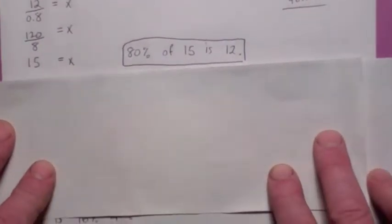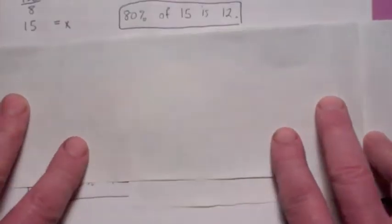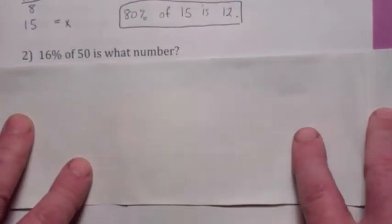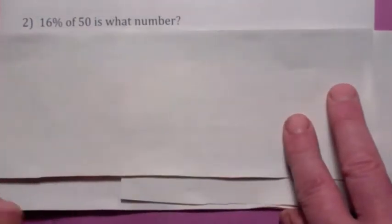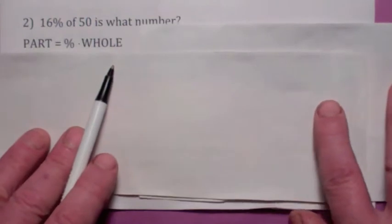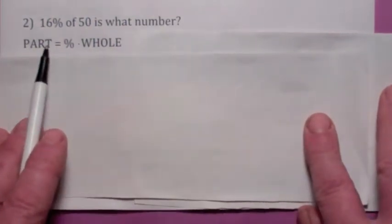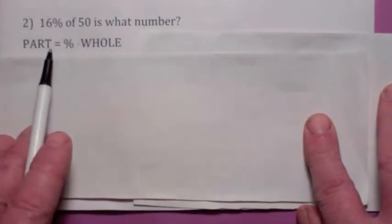Let's do a couple more, then I'll have you try some. This process is the same in all these problems here. Let's look at this next one. It says 16% of 50 is what number? Again, we're using that principle: part equals the percent times the whole. Like I was saying, the hardest part is probably to figure out which each of these is.